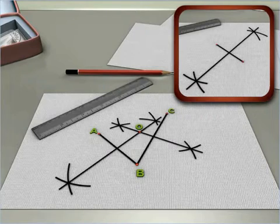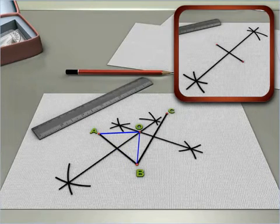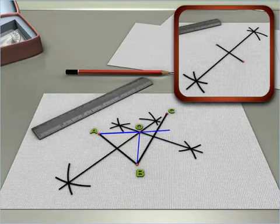Since every point on the perpendicular bisector of a line segment is equidistant from its end point, you get O-A is equal to O-B and O-B is equal to O-C.